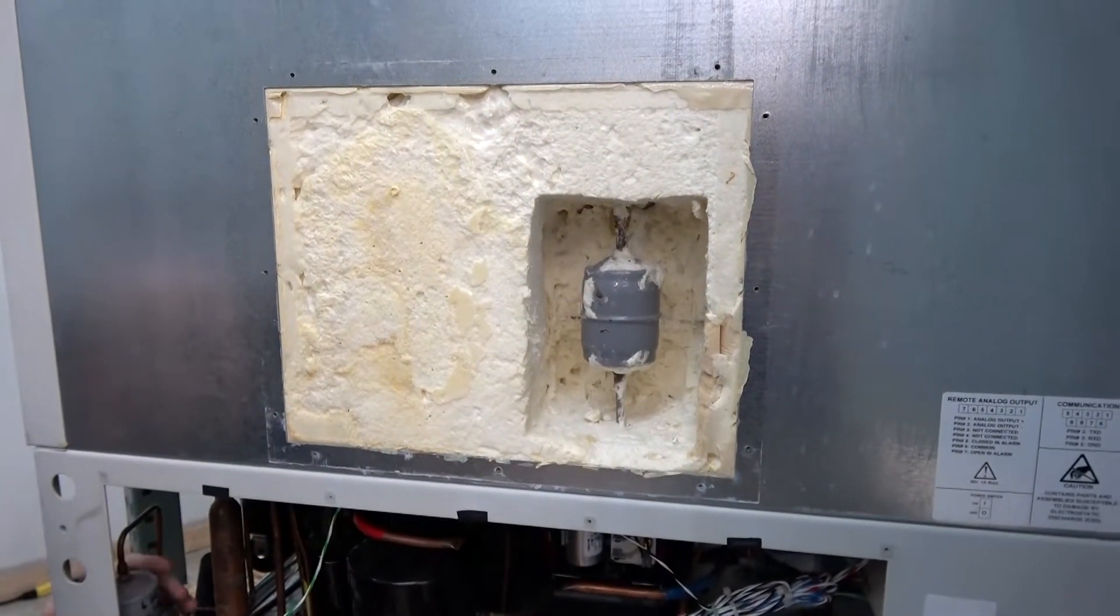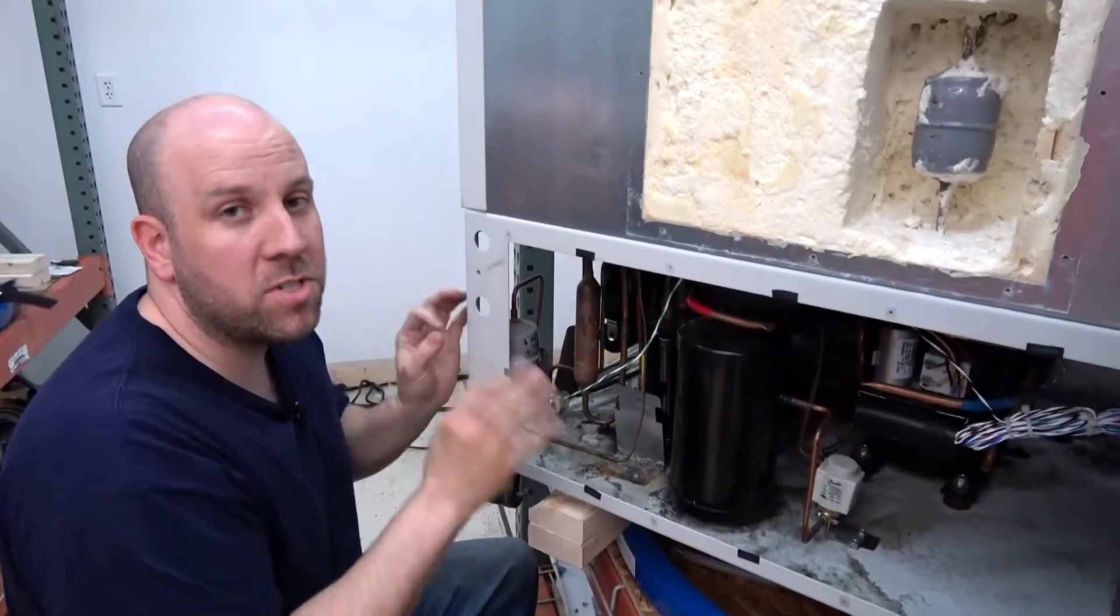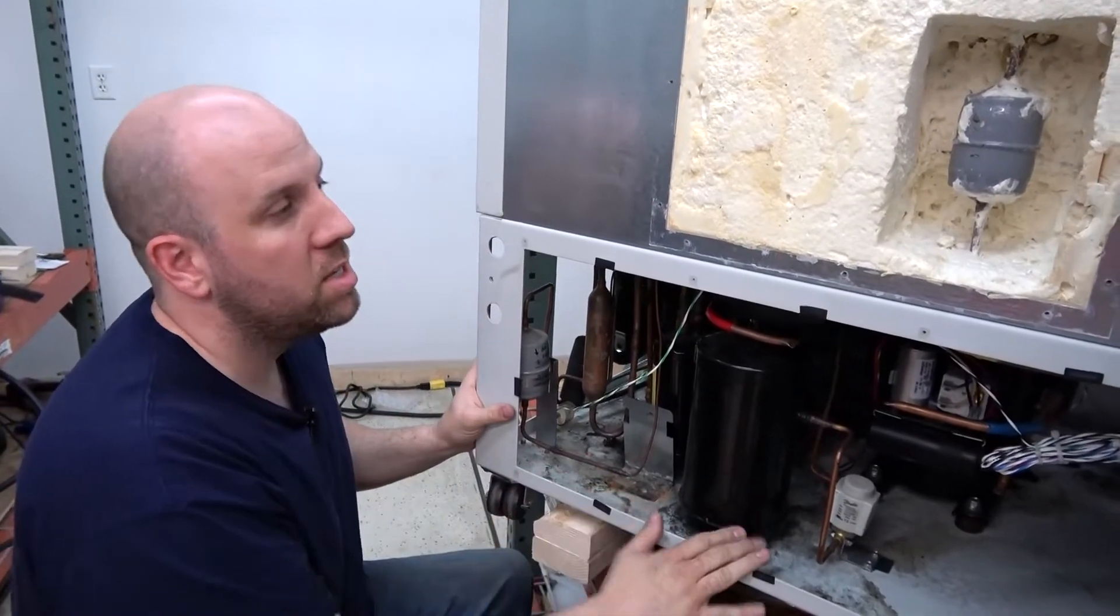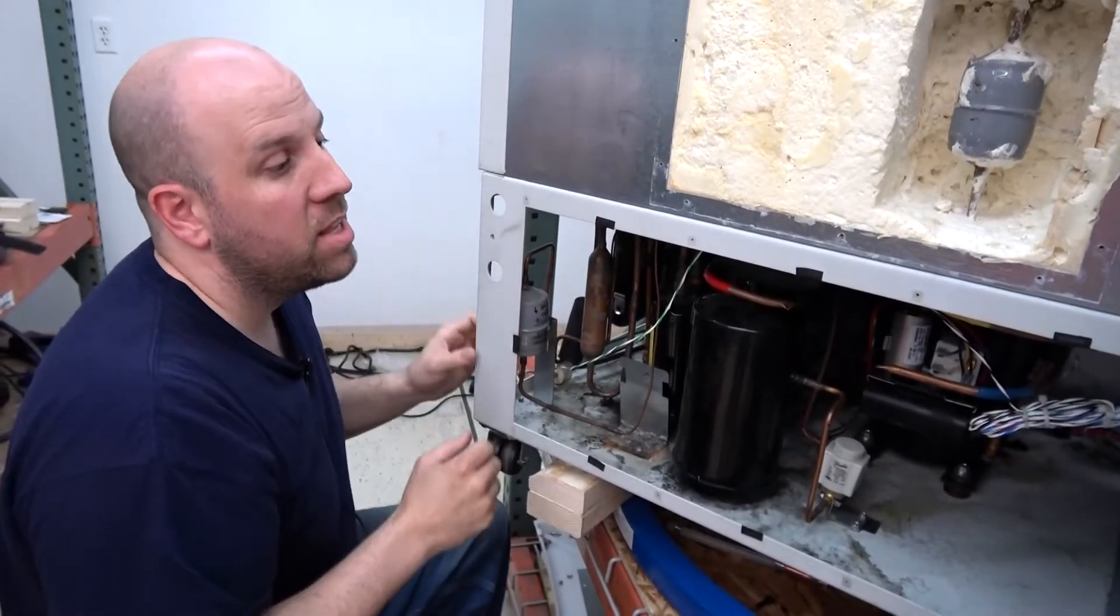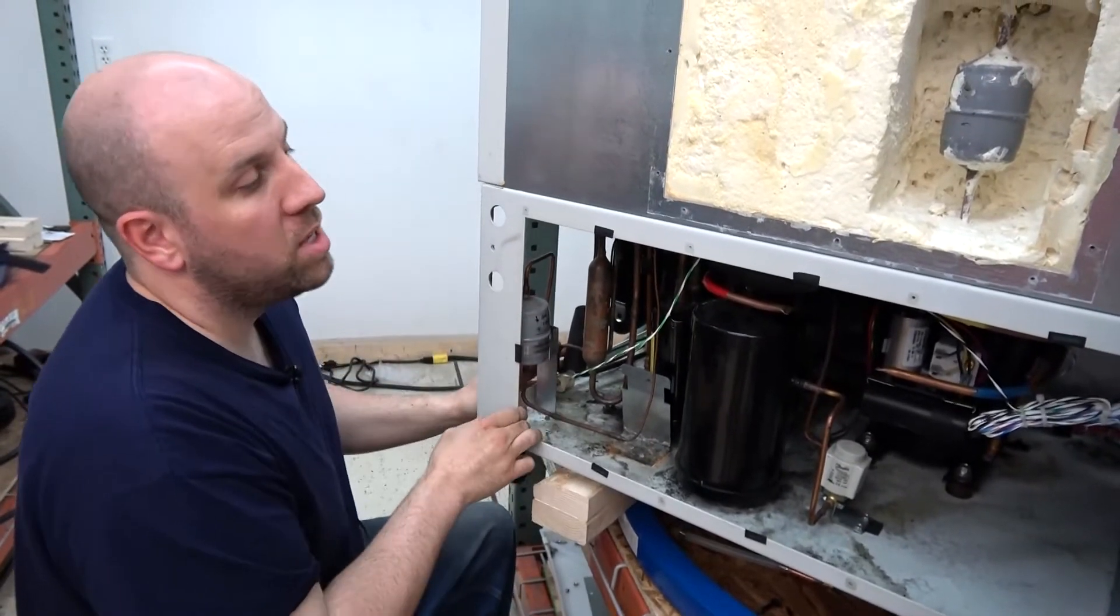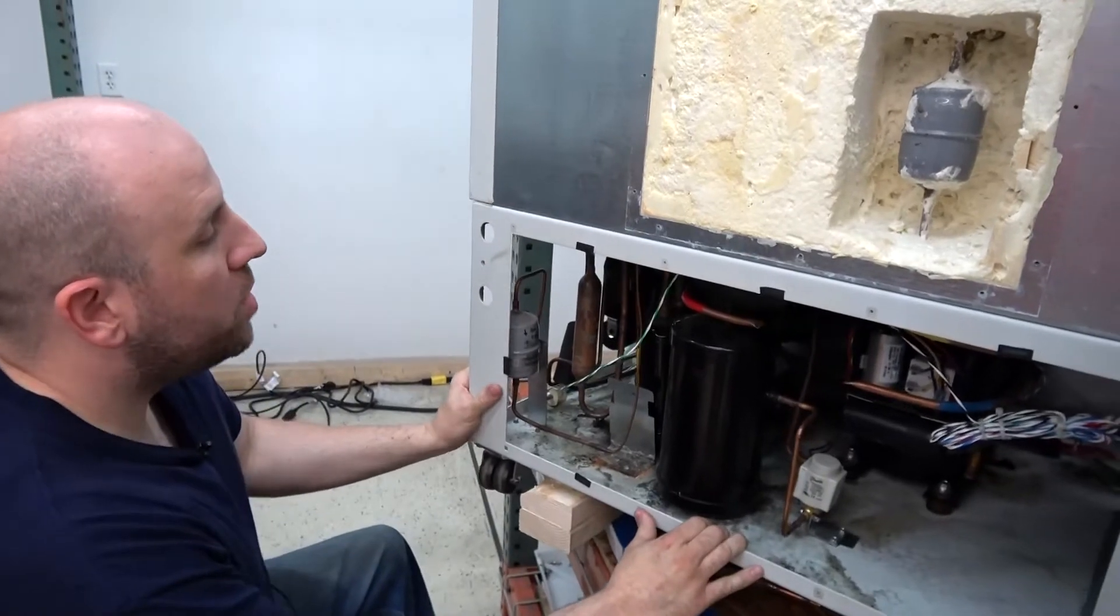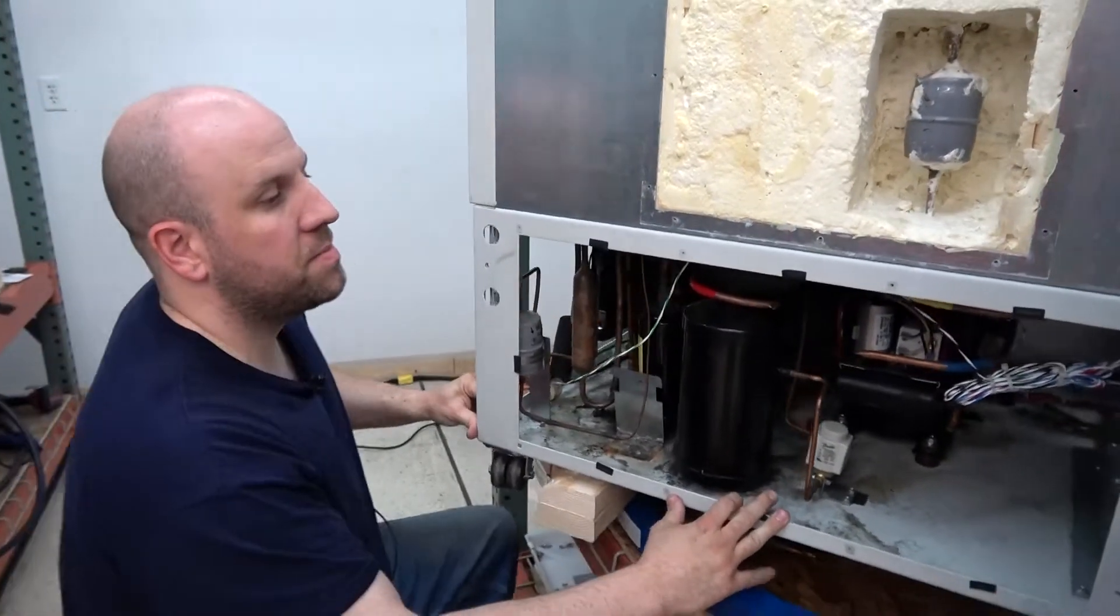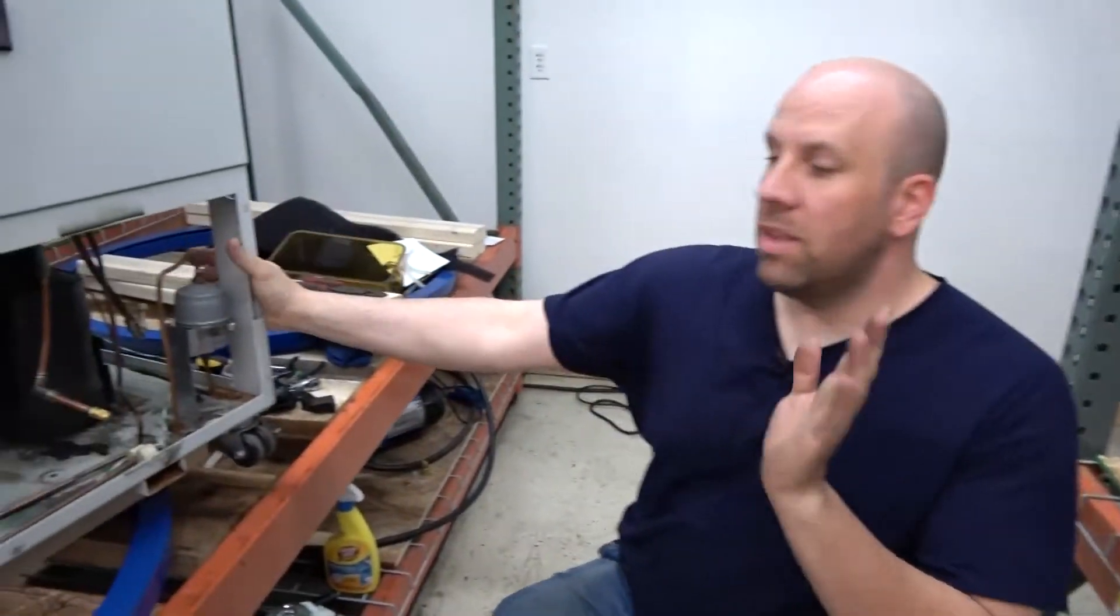Remember here, we're leaving the first stage alone because it tested good. There's no reason to cut into that. So we're concentrating on the second stage, which is the part of the freezer that is really critical and tends to have the most problems. So we take all those components out.